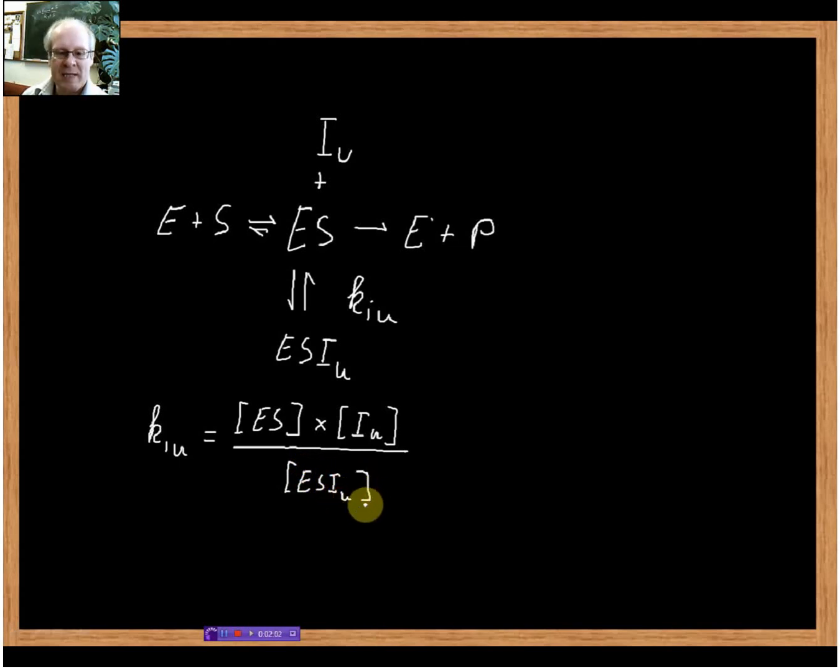What we see very easily is that if KiU is very small, then we would have the concentration of the complex very high. That means if KiU is small, the equilibrium lies very much on this side. In other words, the inhibitor binds very strongly to the ES complex.